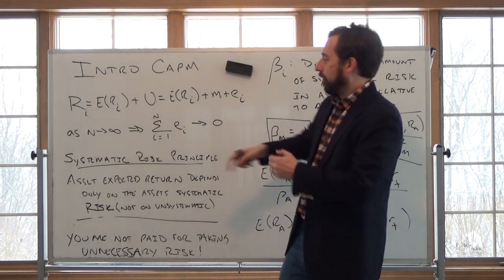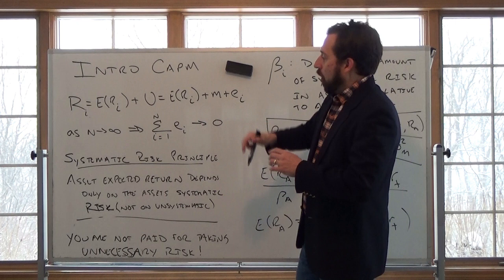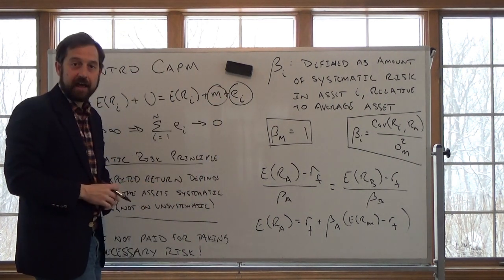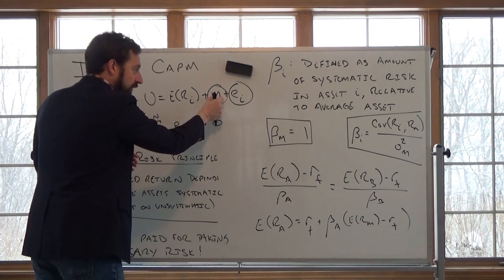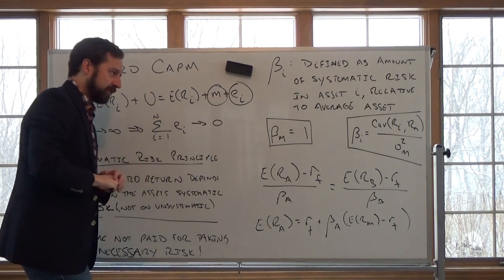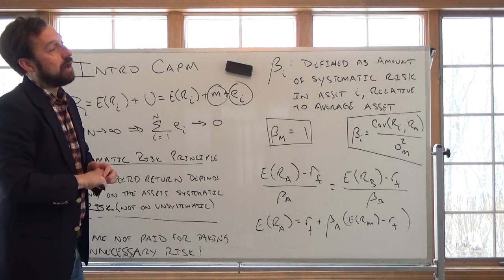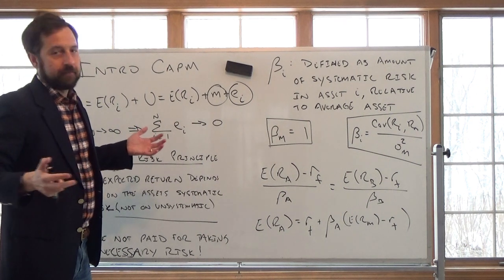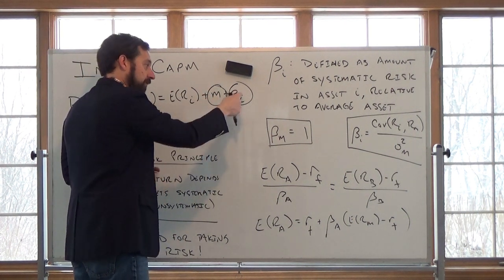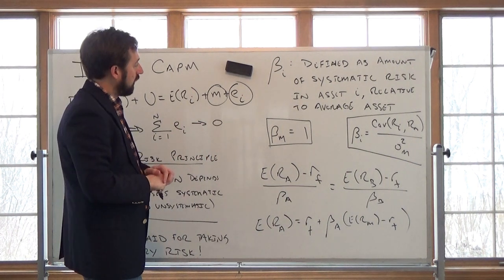If everyone holds the market portfolio, the firm-specific factor averages out. We can get rid of firm-specific risk simply by diversifying — by adding more stocks. But as we add more and more stocks, we can't get rid of the systematic portion — the market risk. If you're fully diversified, you are still holding market risk. Diversification does not get rid of systematic risk; it only gets rid of firm-specific risk. So if you hold the market and the market crashes, diversification won't help you.